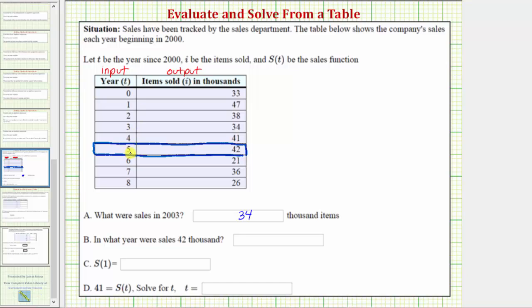Or the input is five, and therefore this should be the year 2000 plus five, or the year 2005.